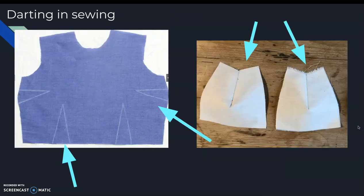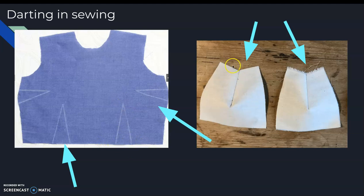This is what darting looks like in sewing. Typically they have a flat piece of fabric, they cut these triangles that are removed, and then they sew them together. That's sometimes how you get those corners of your clothing. So next time you're looking at your clothing, check to see if they did any darting in it.